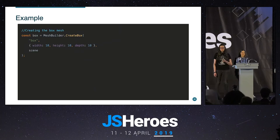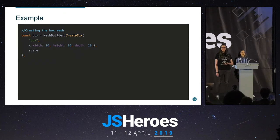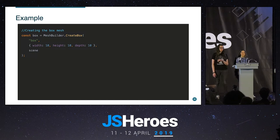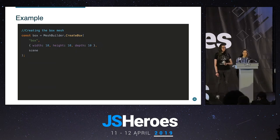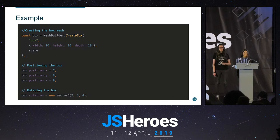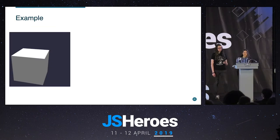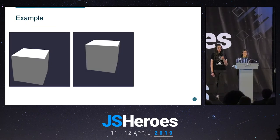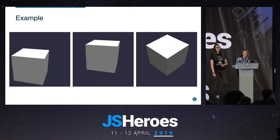Let's create a simple box. We call MeshBuilder.CreateBox, give it a name, set size options to create a simple cube, and assign it to the scene. We can then set the position either by addressing x, y, and z separately or by passing a full Vector3. We can also rotate the box. But it still looks very boring.